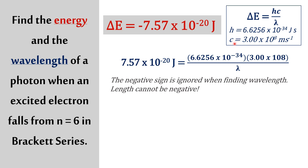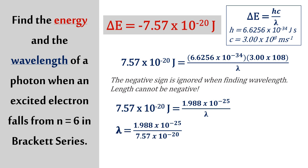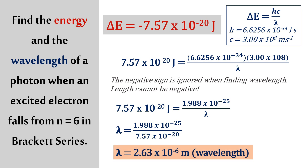H is your Planck's constant, and C is your speed of light — that's what we want to find out. You work that out and you obtain the wavelength of 2.63×10⁻⁶ meter. If your wavelength comes out negative, that means something is wrong. You must ignore the negative sign on your delta E before substituting it into the wavelength formula.